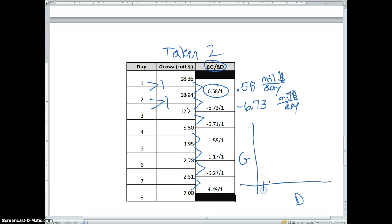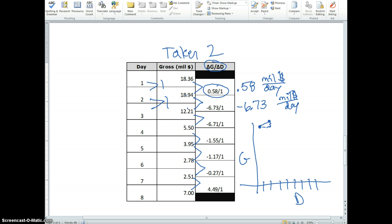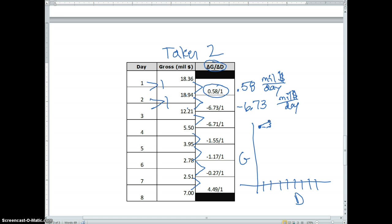I'm going to label 1, 2, 3, 4, 5, 6, 7, 8. On day 1, I'll just pretend like this is 18.36. From day 1 to day 2, I know there was an increase. So, I'm just going to model that increase of 0.58 over the course of one day, and then the next day it dropped by 6.73. So, I have a big drop of 6.73 over the course of that next day.